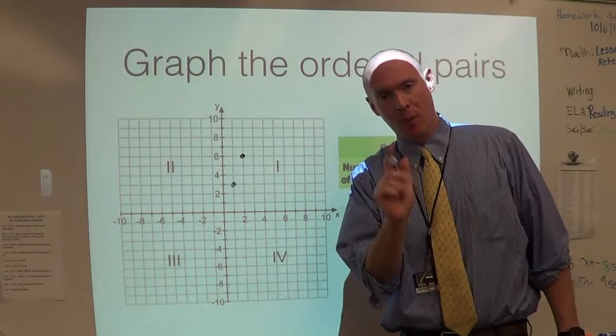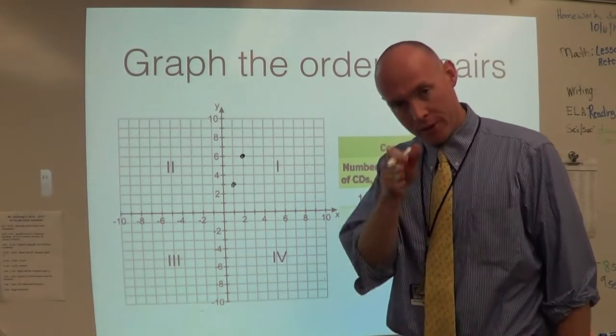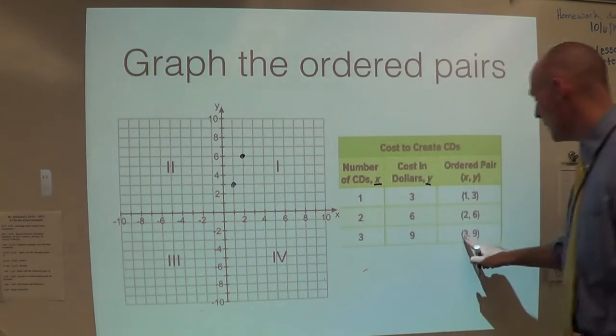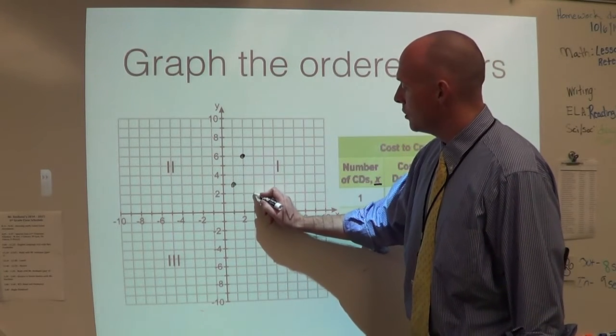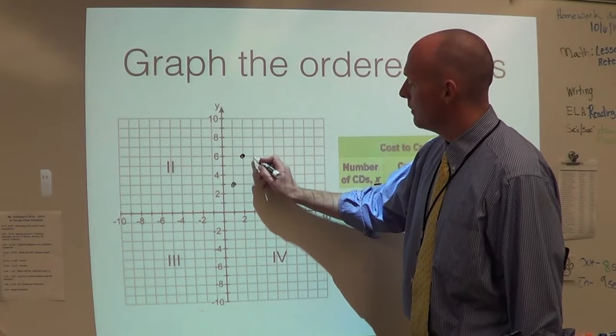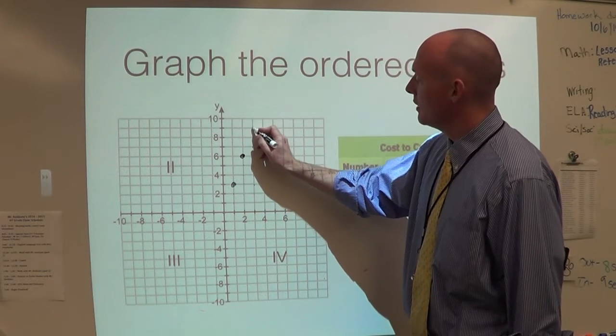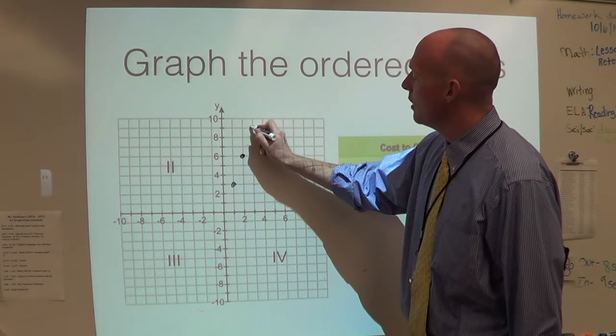Make sure when you darken your points, they're nice and big and bold so you can look and see them. The next one is three, nine. One, two, three, and one, two, three, four, five, six, seven, eight, nine. Making sure I'm there. Perfect.